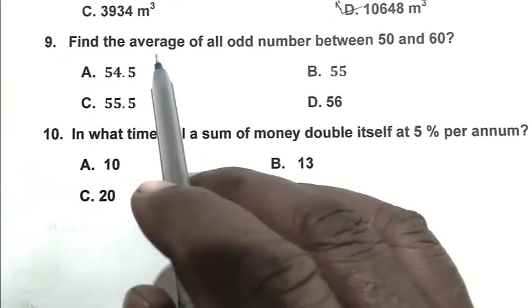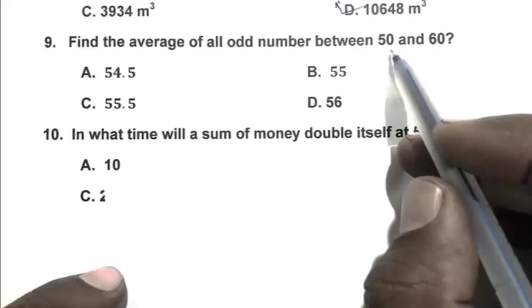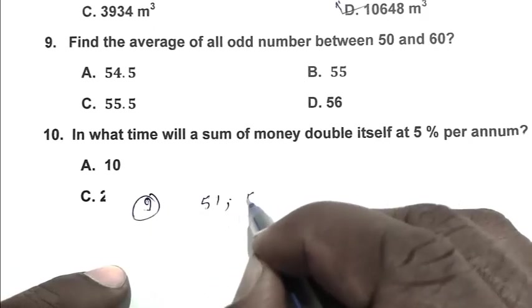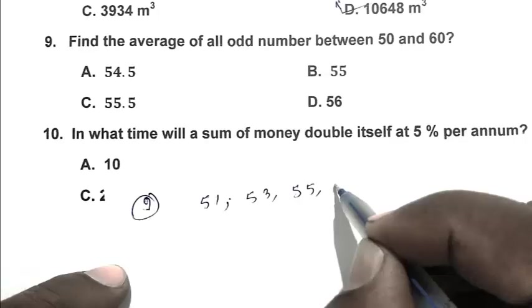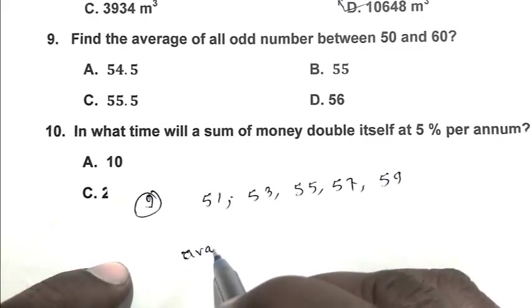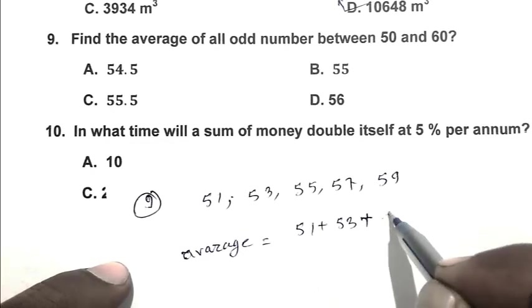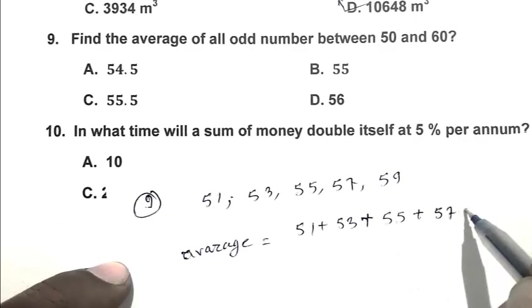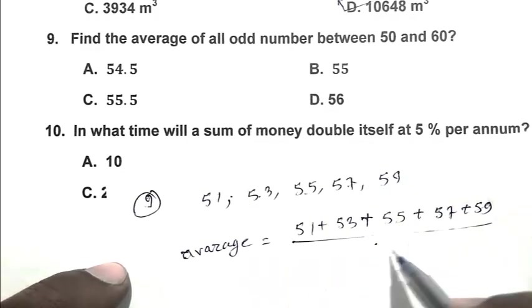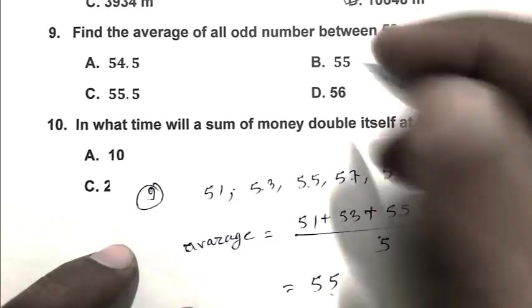Question number 9: Find the average of all odd numbers between 50 and 60. So the odd numbers between 50 and 60 are 51, 53, 55, 57, and 59. Taking the average, it becomes 51 plus 53 plus 55 plus 57 plus 59 divided by 5. So friends, it becomes 55. So B is the right answer.